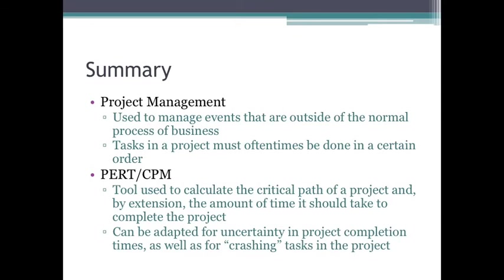In summary, we talked about project management — what projects are. They're big things to get done, so we use project management to handle events outside the normal process of business, these huge goals that need to be accomplished. Tasks need to be done in a certain order, and we break them down so we can actually get them done. To help manage that, we use PERT/CPM, which calculates the critical path and, by extension, the time it should take to complete the project. PERT/CPM can also be adapted to uncertainty and used for crashing tasks. Thank you and good luck.